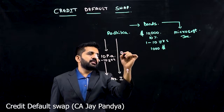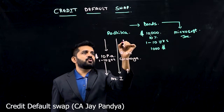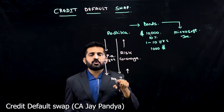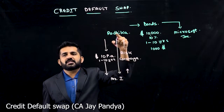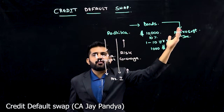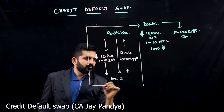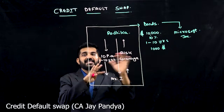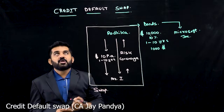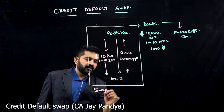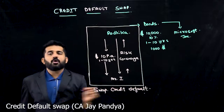So what Mr. I will give is risk hedging or coverage — the credit default risk of Radhika. If Microsoft Incorporation fails, who will be paying money to Radhika is Mr. I. This agreement, whereby there is an exchange of money with risk — an exchange swap — where what is exchanged is credit default risk, is known as a credit default swap.